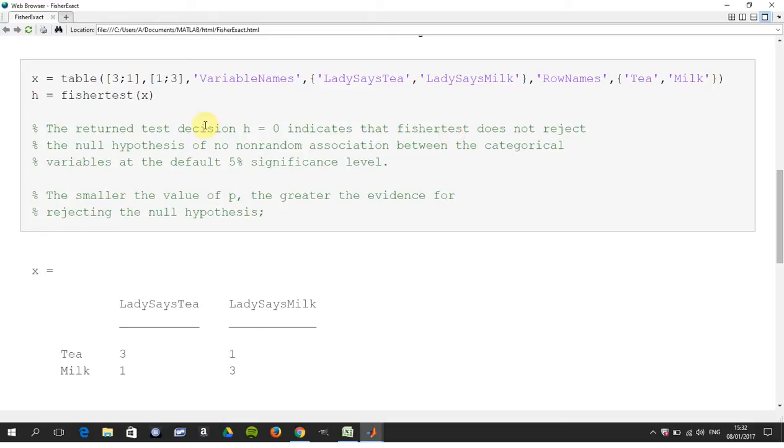And the default is a five percent level of significance. Okay so the smaller the value of p the greater the evidence for rejecting the hypothesis and also the greater the value of p the greater the evidence for accepting the null hypothesis.